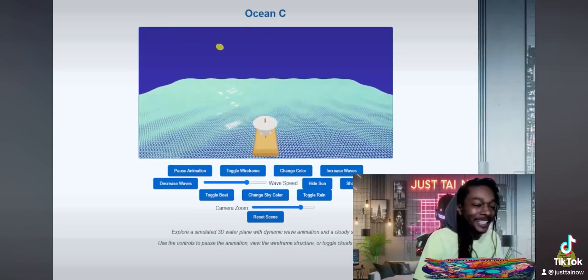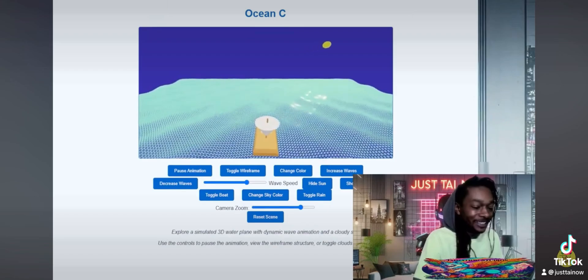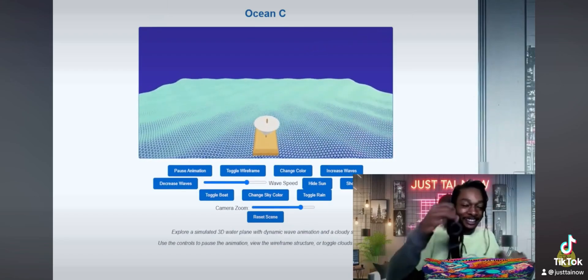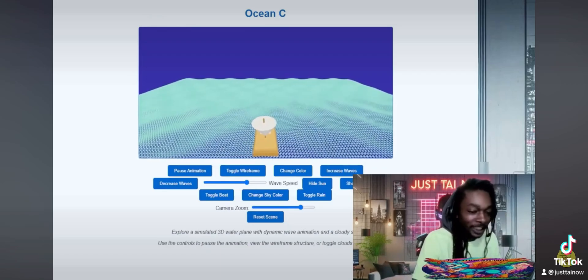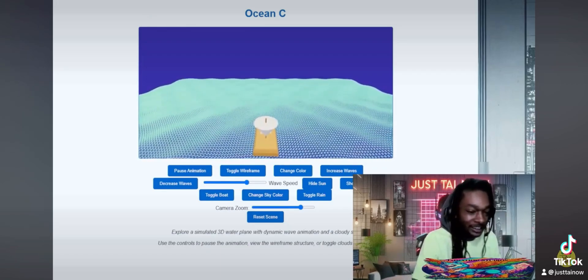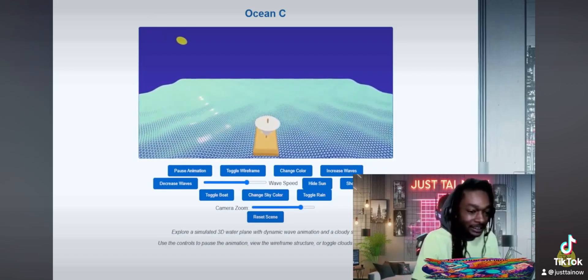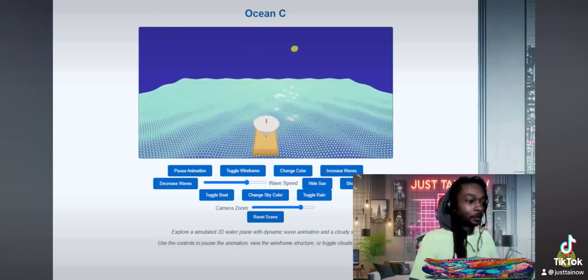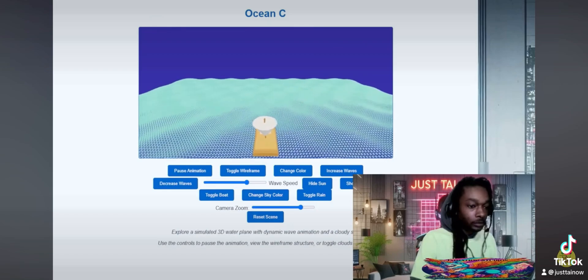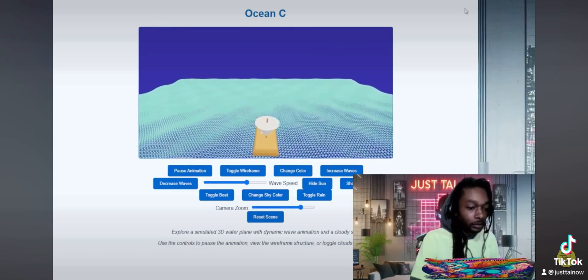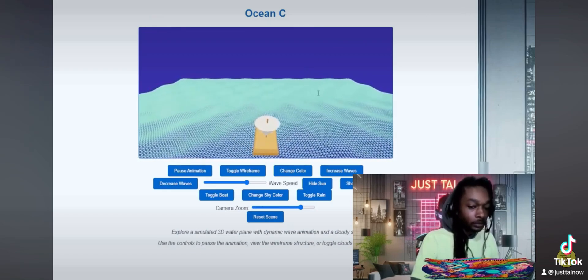So then, if magic and talking donkeys, if that's just normal, then what does that tell us about the rules of reality in Shrek's world? Well, I think it suggests that their reality is much more fluid and less predictable than maybe the one that we live in.